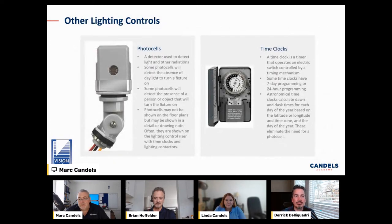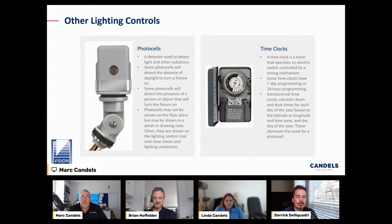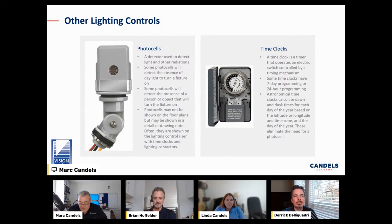Other lighting controls include photocells and time clocks — read the specs because they can get quite pricey. Some astronomical time clocks can cost $1,000. If you're doing a takeoff, either send it to a supplier or open up Epic Pricing to check. Epic is going to be pretty close to what you'll end up buying it for, including freight. Also check for availability — it's not like it was two years ago when there was an abundance of time clocks. You may need to qualify your bid or offer a substitution. Epic Pricing lets you look at or-equals for that.